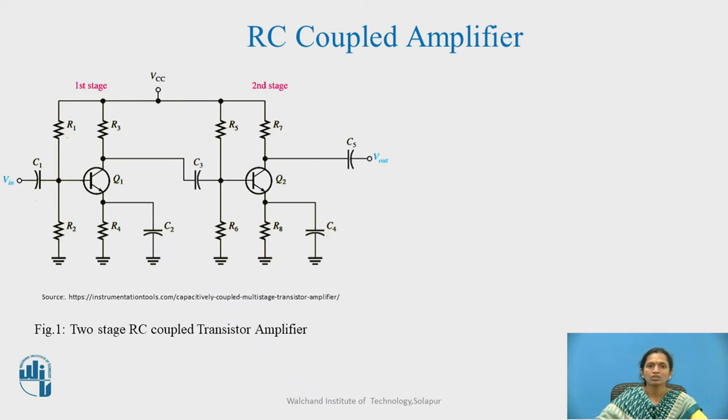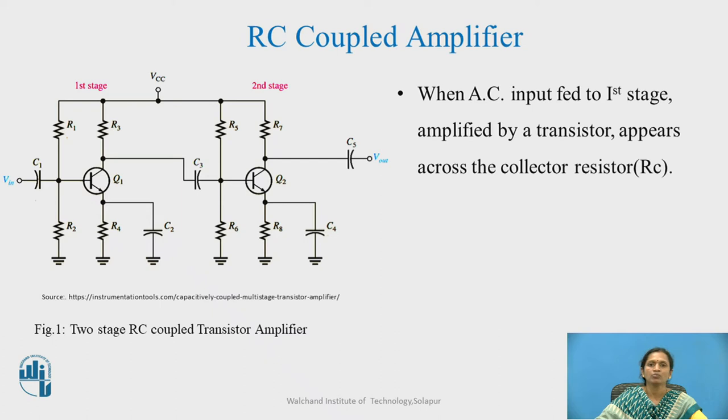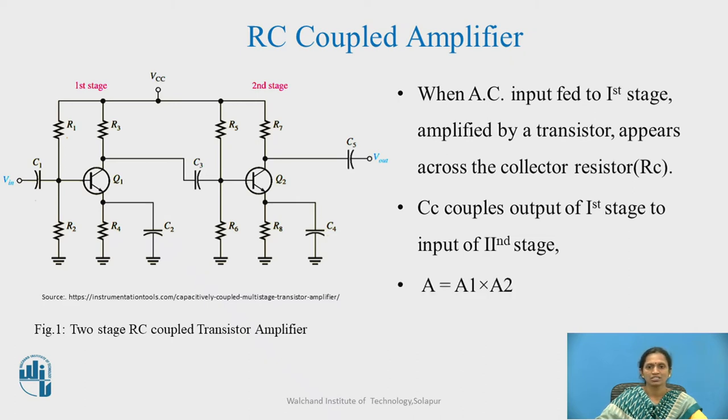We will see the operation when input signal is fed to the first stage which will be amplified by the transistor which will appear across the collector transistor further given to the base of the next stage. This coupling capacitor couples the output of first stage to the input of next stage.